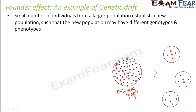Now from this population, if a small number of individuals come out and establish a new population — for example, the red individuals came out and formed a new population here, the blue ones came out and formed another population, and a few blues and reds together formed yet another population. So all these three smaller populations are called the founder populations, and that is why this effect is called the founder effect.